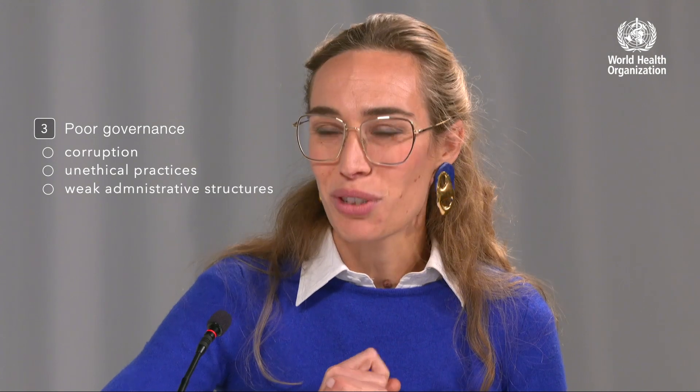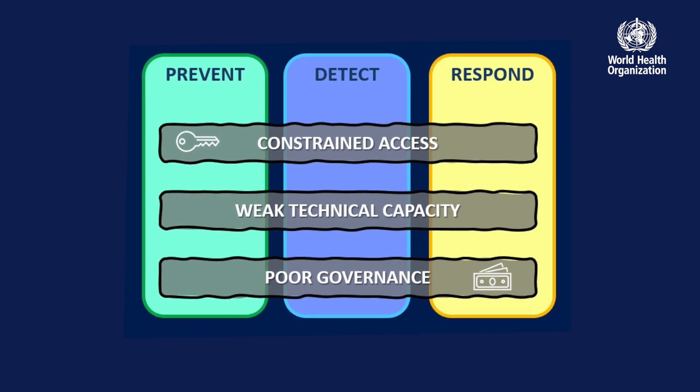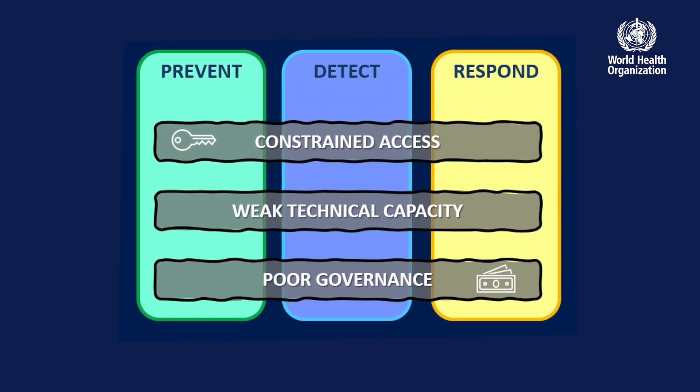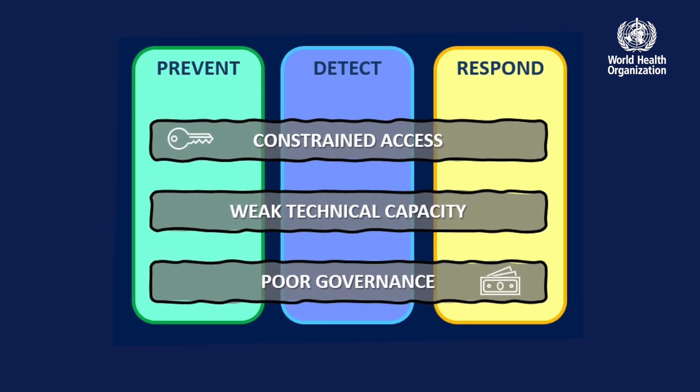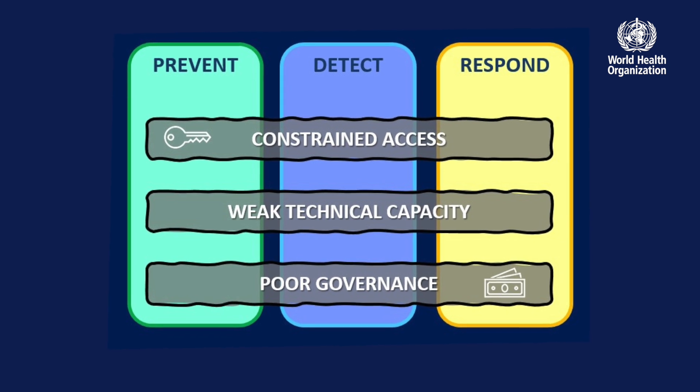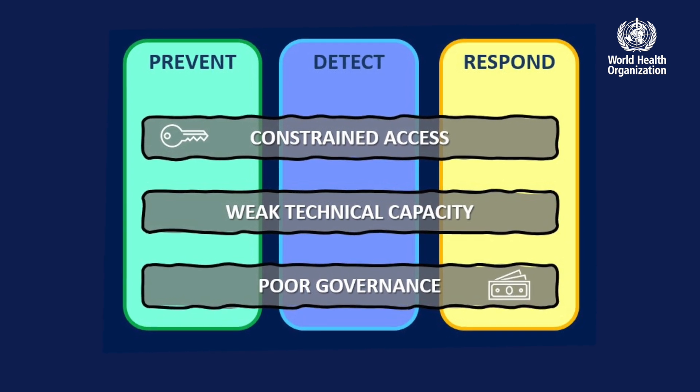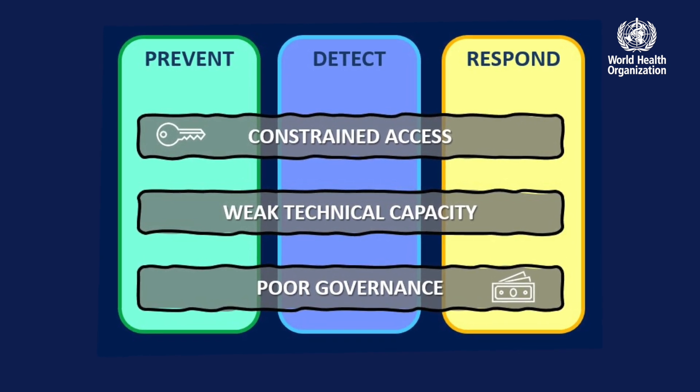You don't need all three driving forces to converge for substandard and falsified medical products to exist — a single one is enough. But populations where these forces converge are the most vulnerable. So how can we all protect ourselves?